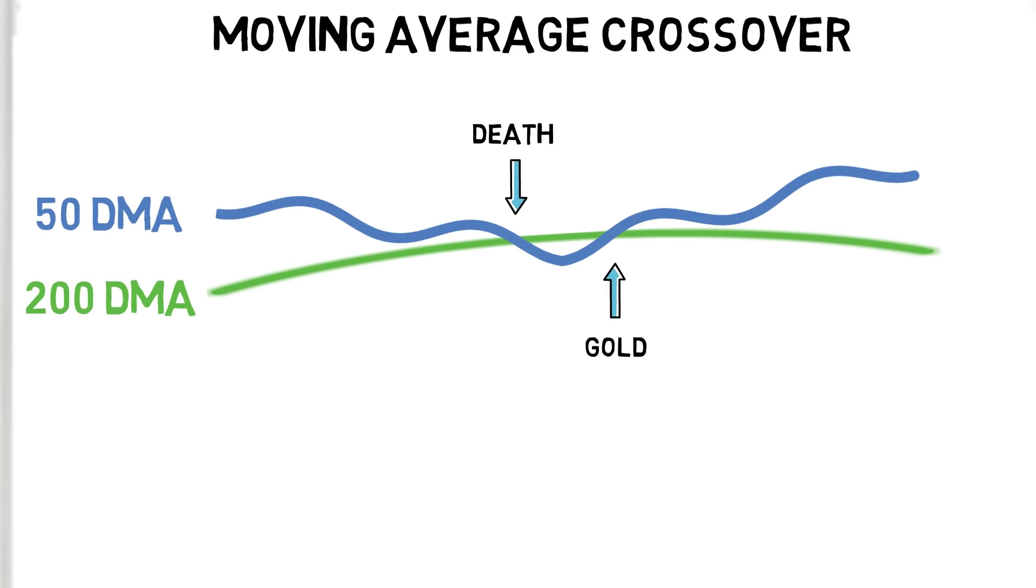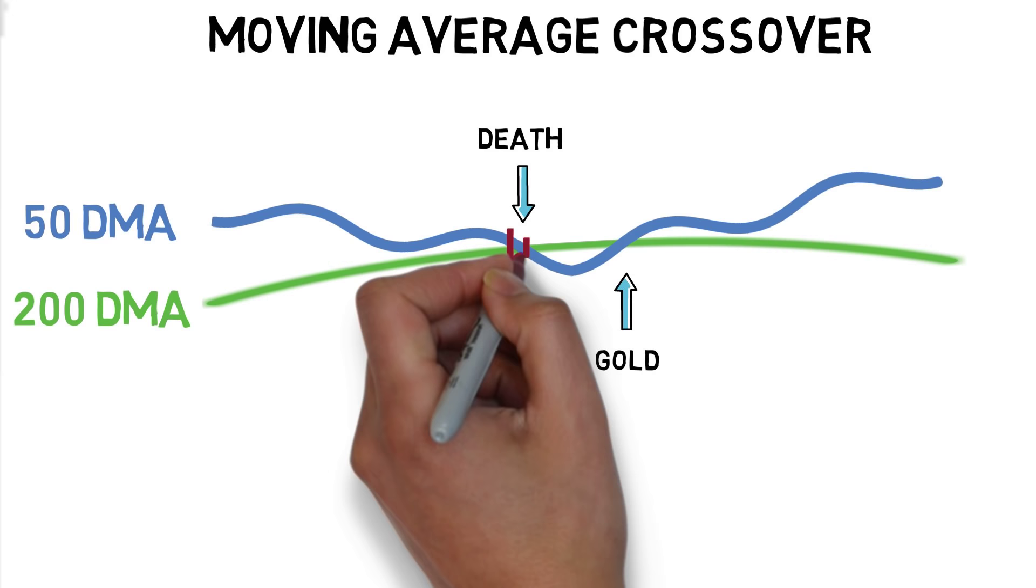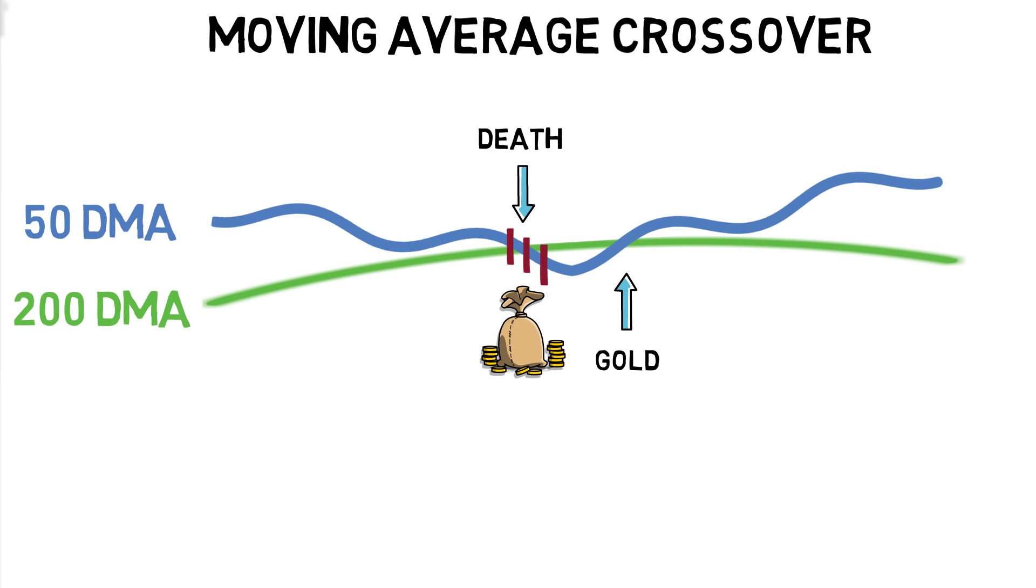For example, if the 50 day moving average crossed below and closed under the 200 day moving average, we would want to be in a cash only position. If the 50 day moving average crossed above the 200 day moving average, we move from a cash position and buy the index.